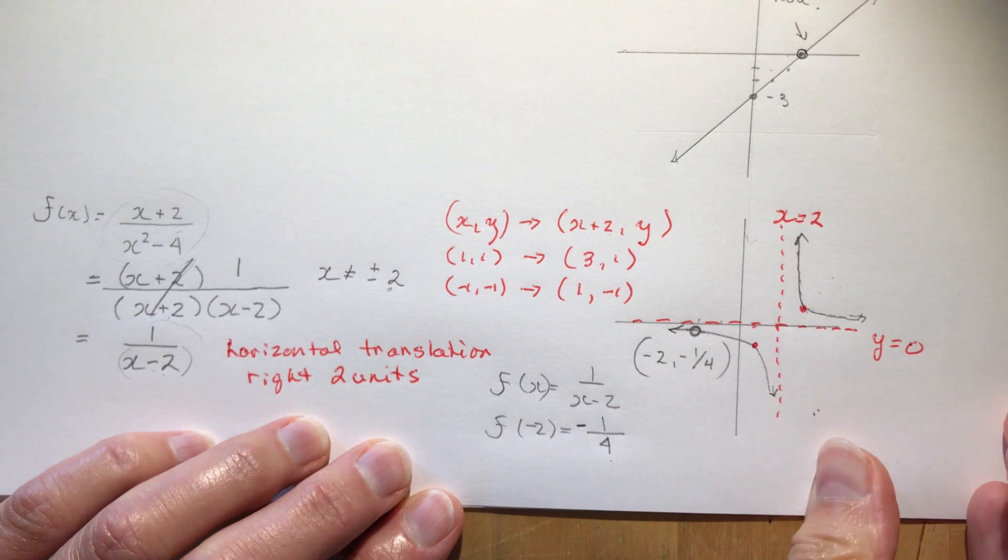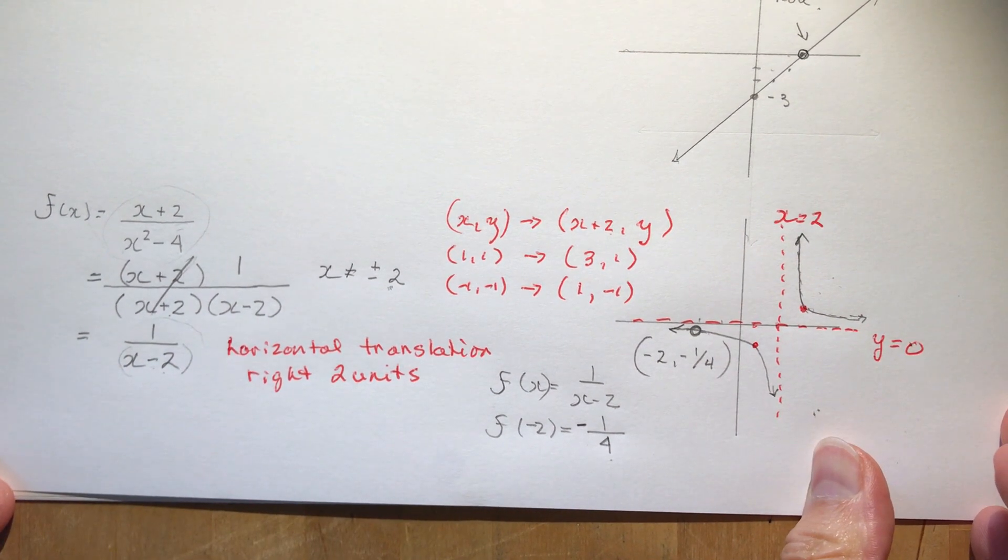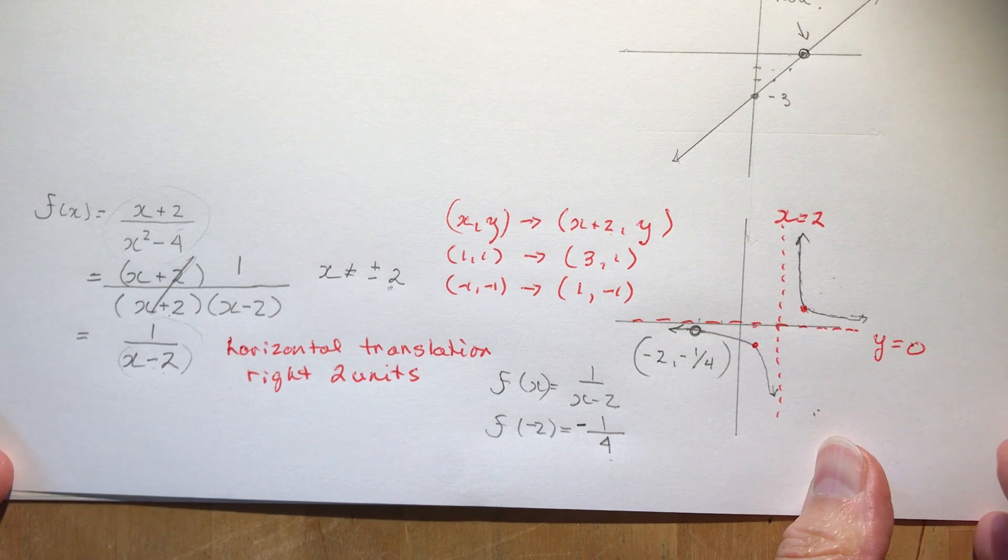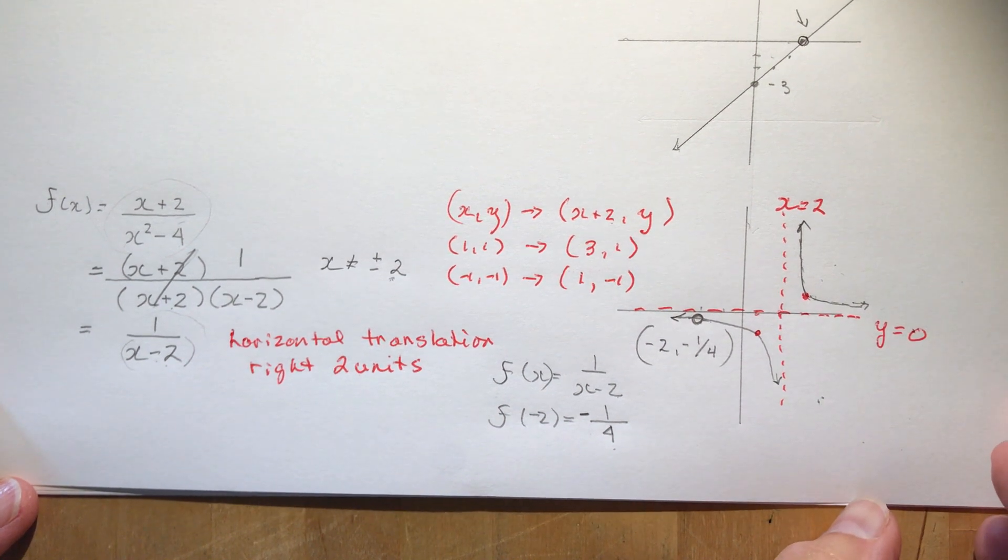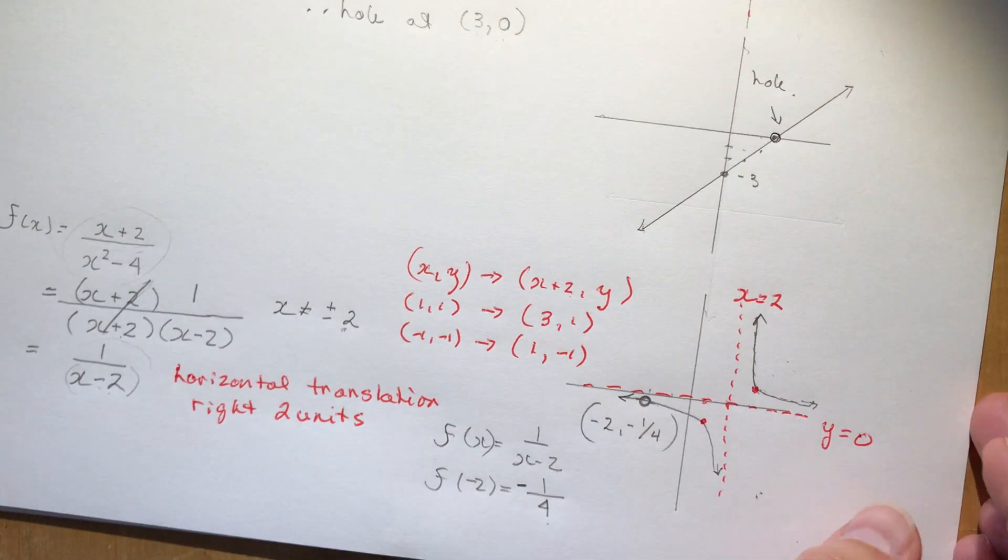And that's what you need to know about simplifying rational functions where you're actually dividing something out and that you get a hole in the graph, and it's something new and exciting. I'll put the link to graphing parent functions for you as well.